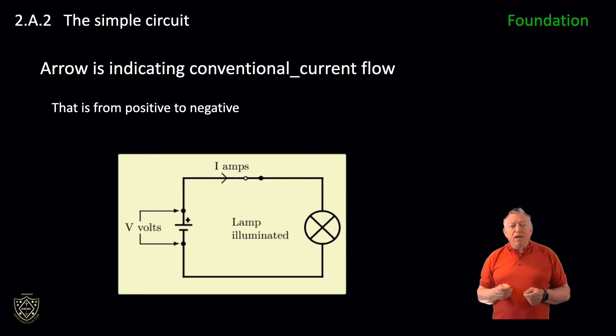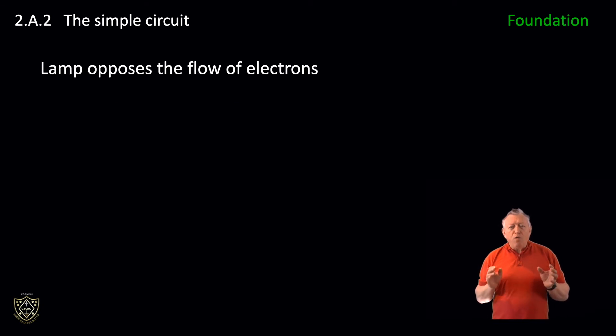Now we see a simple circuit with a switch closed and current flowing of I Amps. Notice that the arrow is indicating conventional current flow. That is, from positive to negative. The lamp opposes the flow of electrons, like the cartoon character Mr. Resistance in video 2A1. It exhibits resistance or opposition of the current flow by converting electrical energy into light and heat energy.